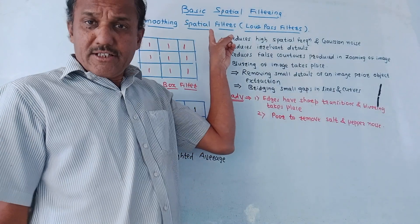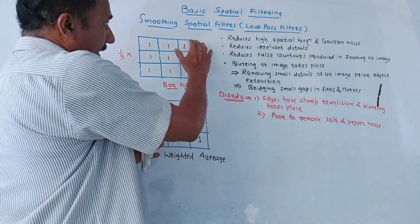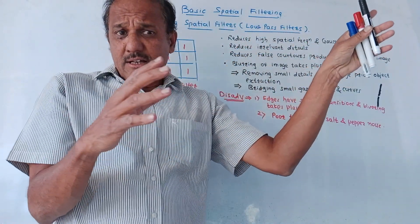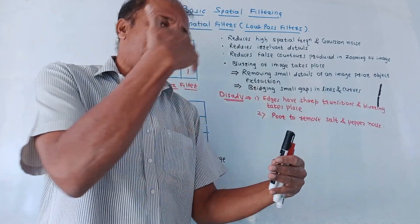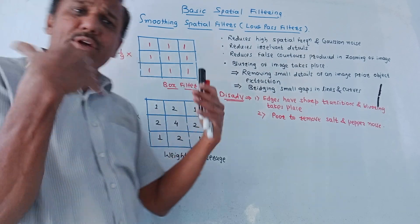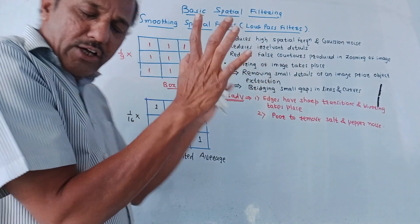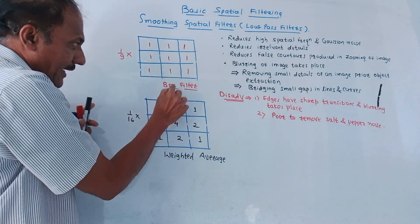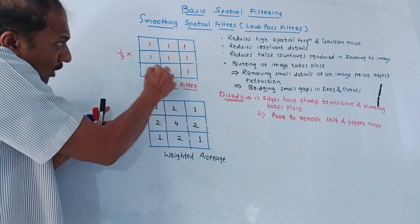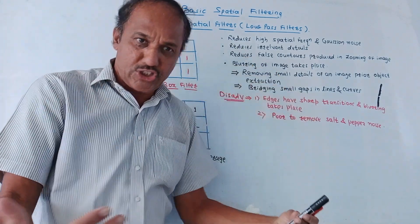The next part is smoothing spatial filters, also called low-pass filters. You may expect a direct question related to smoothing effect using spatial filters or the operation of low-pass filters in the spatial domain. As the name indicates, it is a low-pass filter — it passes lower frequencies and attenuates or blocks higher frequencies. I have shown two masks. The first mask has all values equal to one; these values are called coefficients of the mask. If all coefficients are one, it is called a box filter, considered with a size of three rows and three columns. The sum of all coefficients is nine, so the resultant value is multiplied by 1/9 — meaning we are performing averaging. This is also called average filtering.